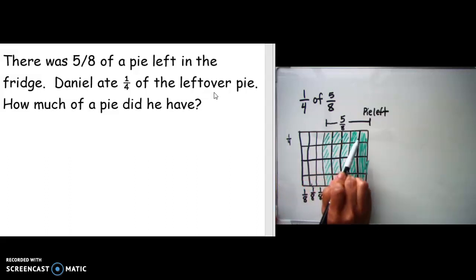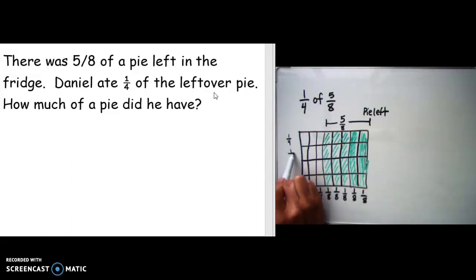Now I have this section that shows one half and so on. Daniel ate one-fourth of the pie, so I am going to color in a fourth. That would be this whole section here.